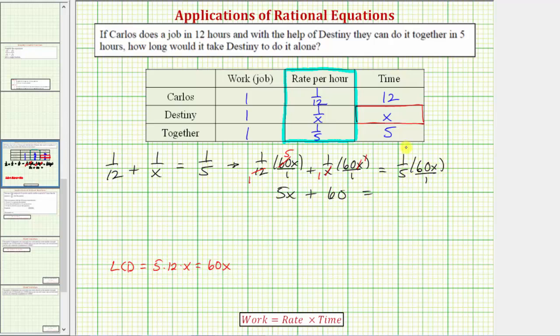on the right, we have a common factor of five. There's one five in five and twelve fives in sixty. This product is twelve x.